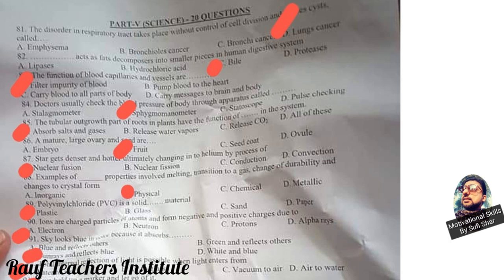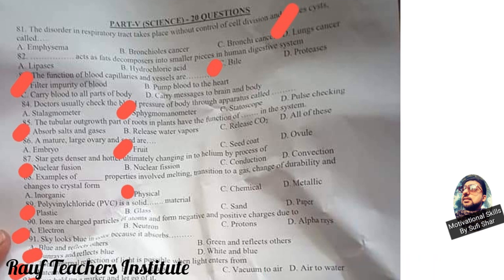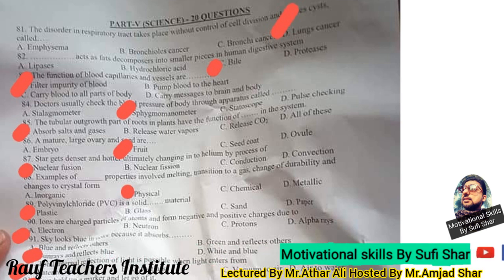Question number 91: The sky looks blue. The correct answer is B — the atmosphere absorbs all other colors and reflects blue. When sunlight passes through the atmosphere, it always reflects blue and reflects other colors away.